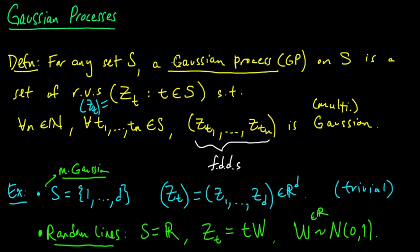But what the theorem on the existence of Gaussian processes says is not that there exists some Gaussian process, but that you can choose these finite dimensional distributions at will, and there will be a Gaussian process with those finite dimensional distributions. So we're going to state that result.